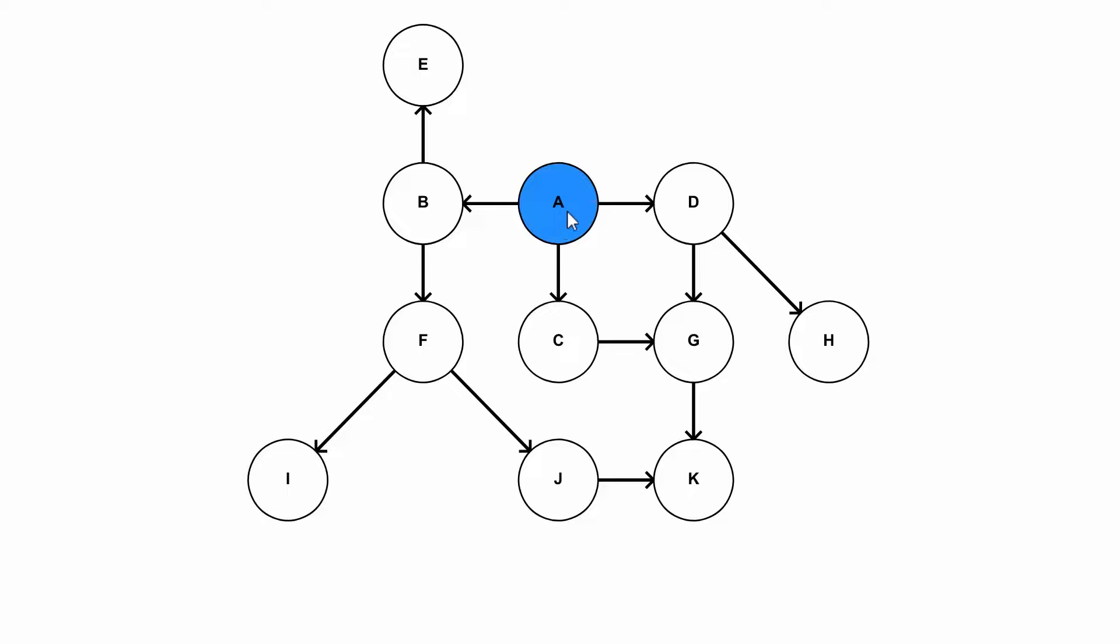So what I mean by that is if we focus here on A and B, this arrow means that in order to do B, we must first do A.